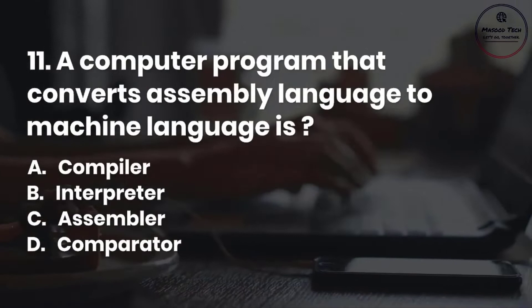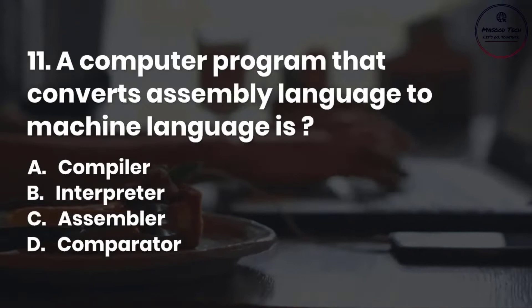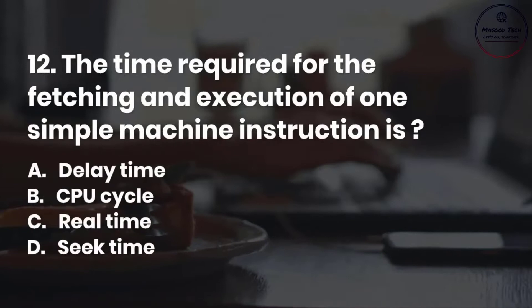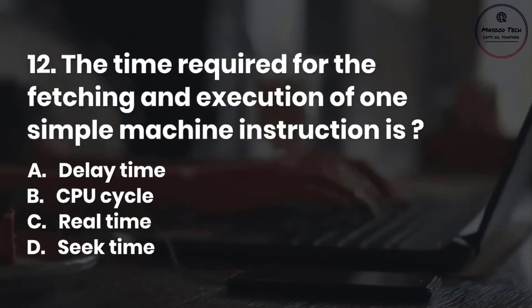Number 12. The time required for the fetching and execution of one simple machine instruction is: A. Delay time. B. CPU cycle. C. Real time. D. Seek time. Correct answer is B.